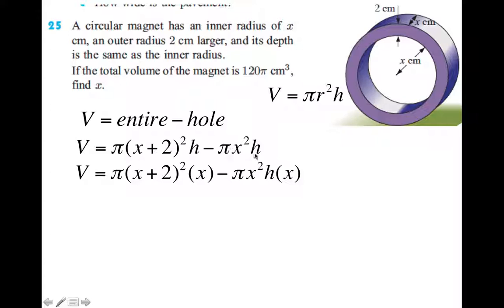So I'm going to simplify that some more. First of all, the h's I've replaced with x, because the height of the cylinder is x right there. It shows us there. So now we have this. Now I'm going to replace the volume with the 120π, because it tells us the volume of the magnet, just the purple part, is 120π.